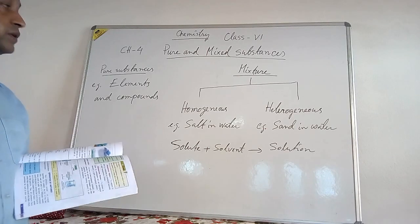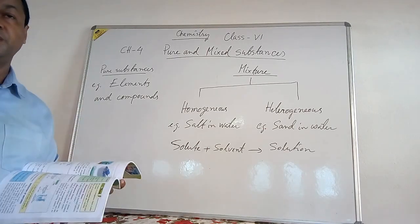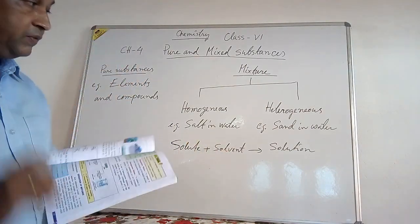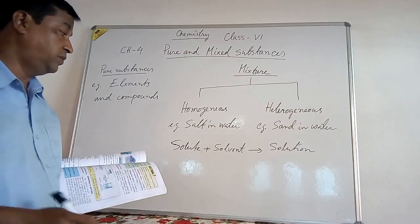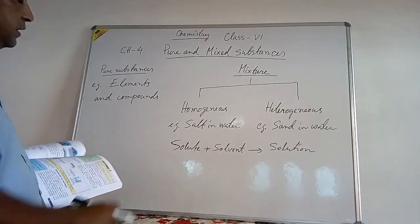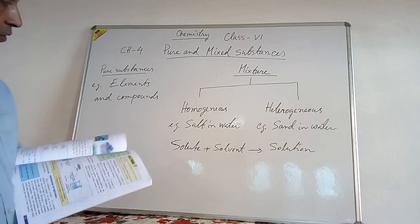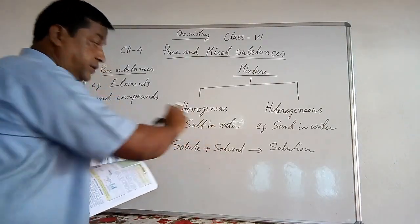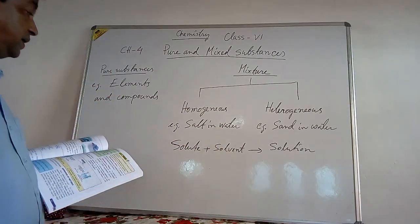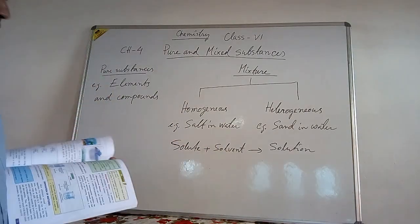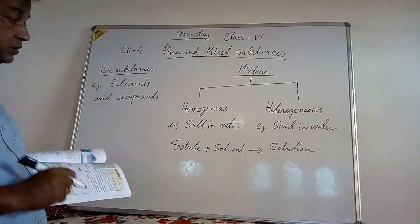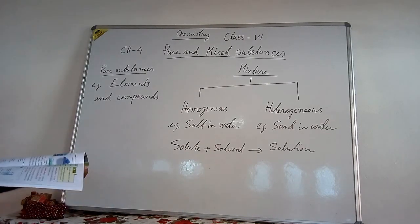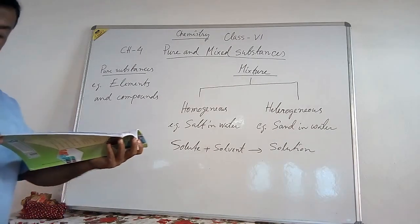Let's look at the definition of solute and solvent. Solute is the substance which is dissolved in the solvent. The solvent is mostly water. In the example of salt in water, salt is the solute and water is the solvent. When solute dissolves in solvent, the resulting mixture is called a solution. You can see this definition at the bottom of the left-hand side of page number 59.